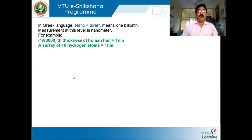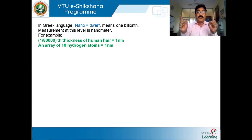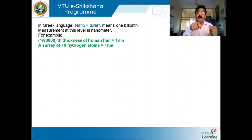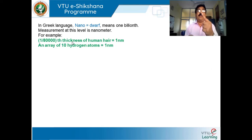Nano is a word derived from Greek language. Nano in Greek stands for dwarf, meaning one millionth of a meter. For comparison: if you take a human hair and divide it into 80,000 pieces — splice it, not cut — and take just one piece, that is one nanometer.